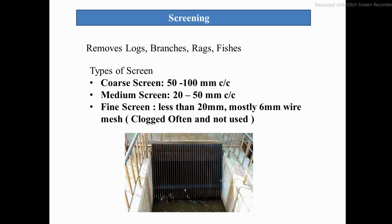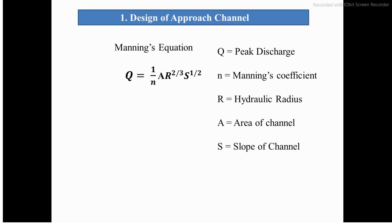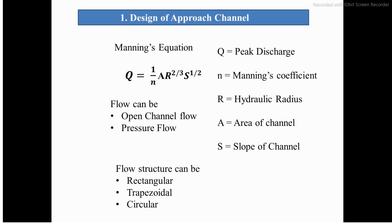The fine screen is mostly 6 mm wire mesh but is not often used because it clogs frequently. In the design, we first design the approach channel using Manning's equation: Q = (1/n) × A × R^(2/3) × S^(1/2), where Q is peak discharge, n is Manning's coefficient, R is hydraulic radius, A is the area of the channel, and S is the slope. We are discussing open channel flow here.